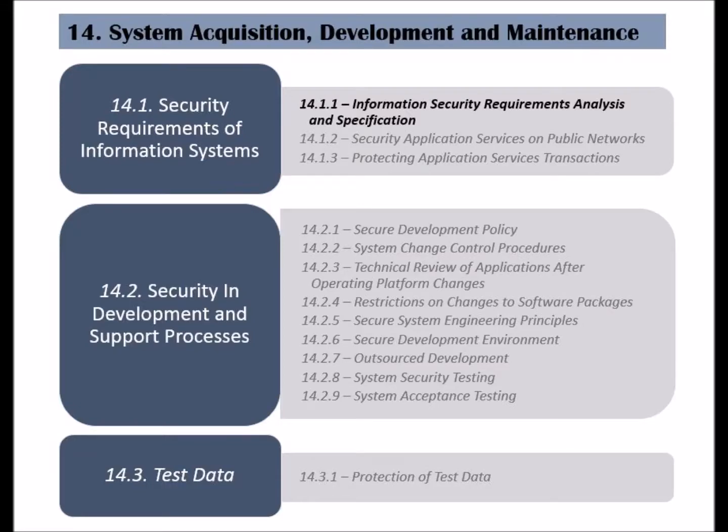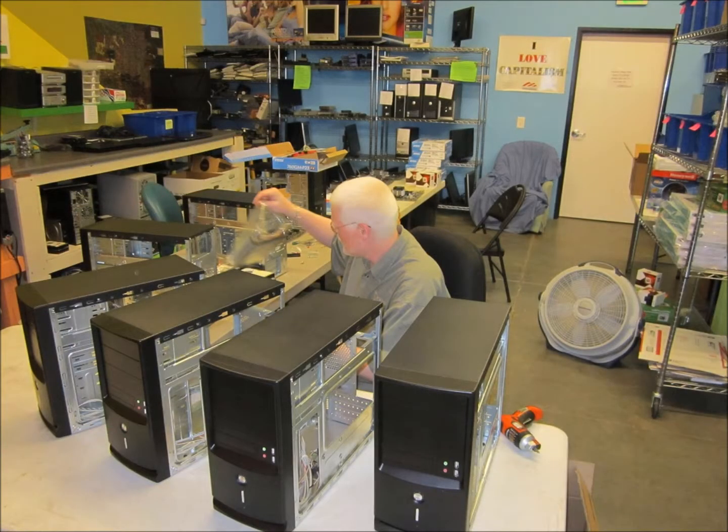The 10th clause of the ISO 27002 standard is called System Acquisition, Development, and Maintenance. It has three categories, and the first is called Security Requirements of Information Systems. The objective of this category is that information security is applied to the entire life cycle of any information system in the organization. This category has three controls.